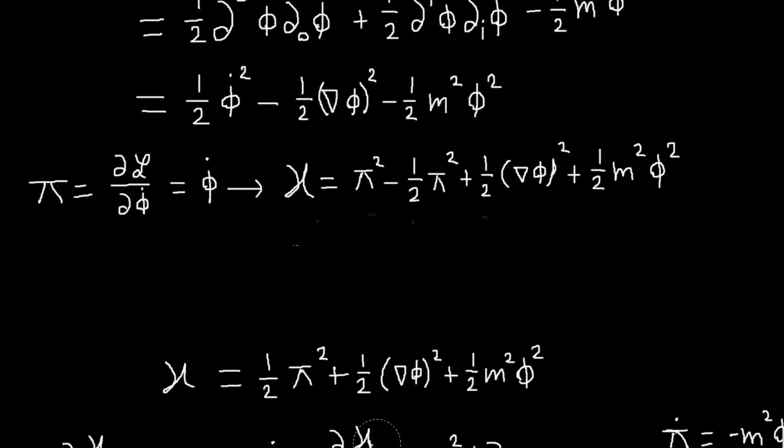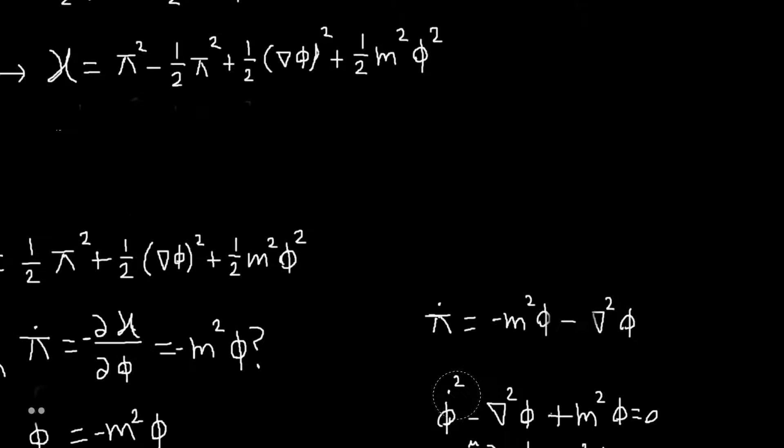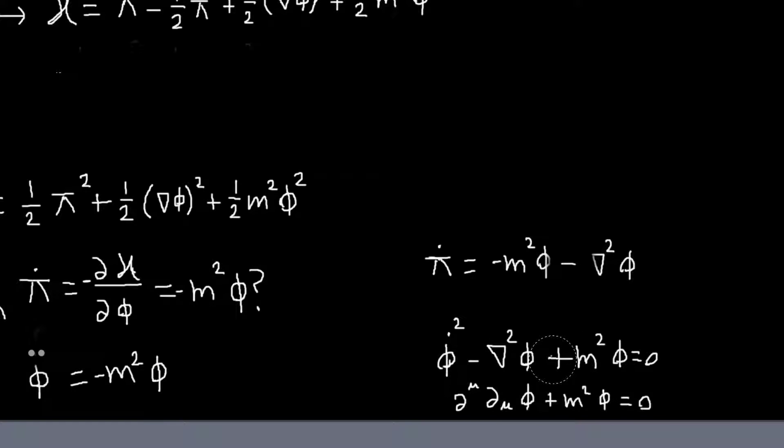So if we go back, we need to add that term, or well, it's minus dH/d phi, so minus that term to the right hand side. So now we'll have this equation, which will lead correctly to the Klein-Gordon equation.